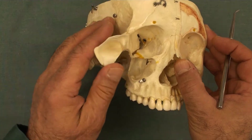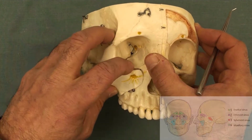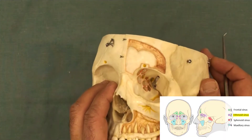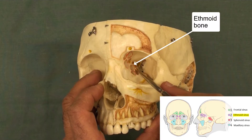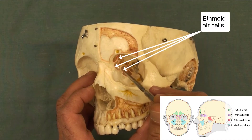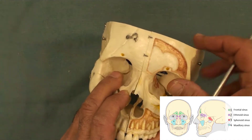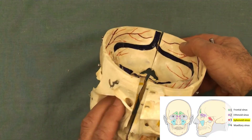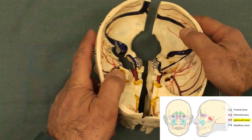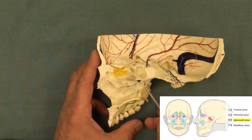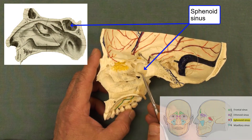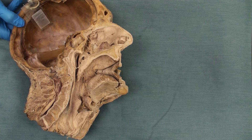Regarding the ethmoid sinus, also known as ethmoid air cells, they are inside the ethmoid bone, which is located on the medial wall of the orbit — so these are the ethmoid air cells. Last but not least, the sphenoid sinus — for that one we need the sagittal section. Here is the sphenoid sinus, which also opens into the nasal cavity.